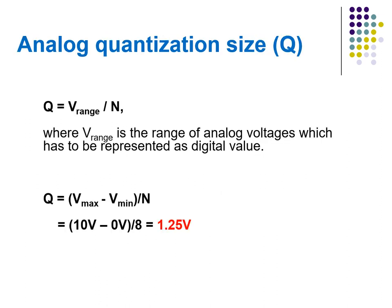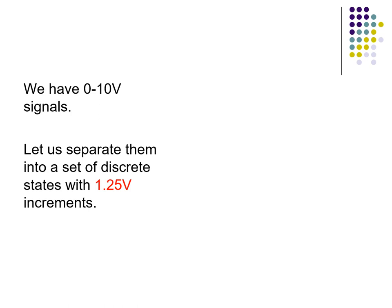The quantization size Q is given as the voltage range divided by N, where voltage range is the difference between maximum and minimum voltage. In our example, Q = (V_max − V_min) / N = (10 V − 0 V) / 8, which gives us 1.25 volts.